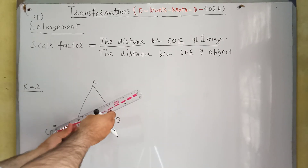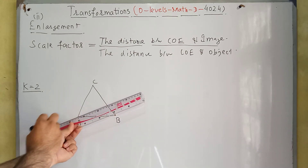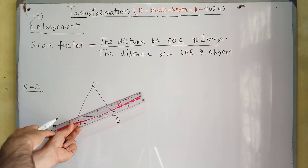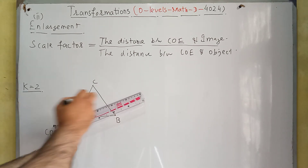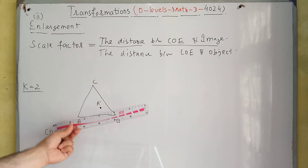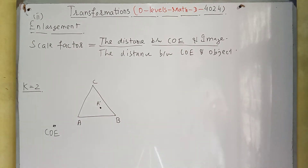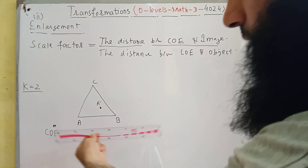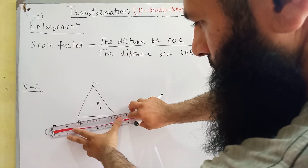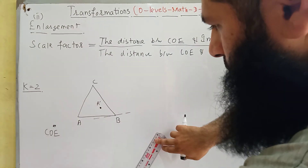The distance between the center of enlargement and point A is 8 cm. Since scale factor is 2, the distance between the center of enlargement and the image of A will be double — 16 cm. The distance between the center of enlargement and point B is 20 cm, so the distance between the center of enlargement and B-dash will be 40 centimeters.